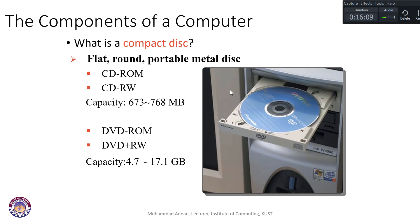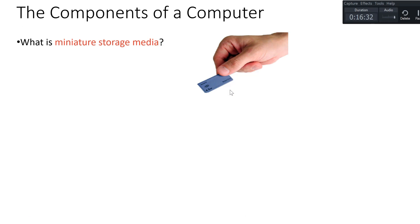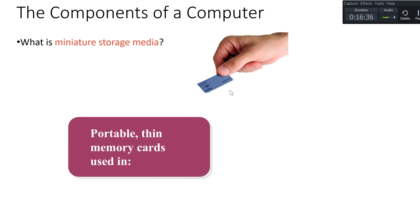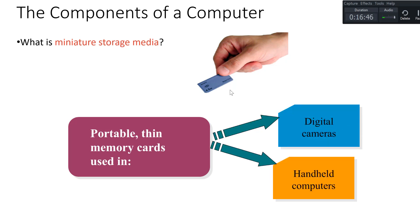CD-ROMs or CD-RWs (rewritable) normally have a capacity of 673 to 768 MB. DVD-ROMs or rewritable DVDs have much more capacity — normally up to 4.7 GB if one side is used, or up to 17.1 GB if both sides are used. Storage media also comes in the form of memory cards used in smartphones and digital cameras. Nowadays smartphones have very large storage, so these miniature storage media are rarely needed, but you should still know about them.